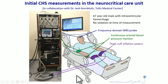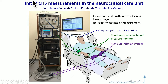We are moving this application into the clinic. We performed initial CHS measurements in the neurocritical care unit in collaboration with Dr. Kornbluth at Tufts Medical Center. This is an initial result on a 67-year-old patient with intraventricular hemorrhage. The protocol involves cyclically inflating and deflating pneumatic thigh cuffs above systolic pressure to induce systemic oscillations in mean arterial pressure, while measuring oxy and deoxy-hemoglobin concentrations in the prefrontal cortex using near-infrared spectroscopy and analyzing them with the CHS model.